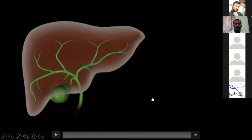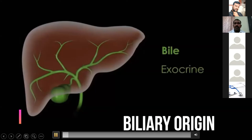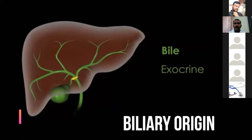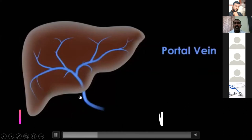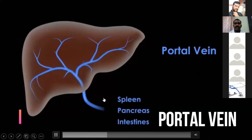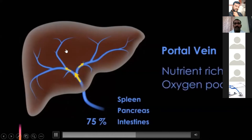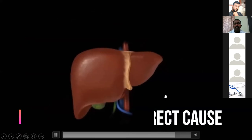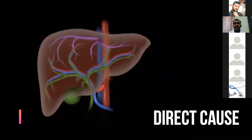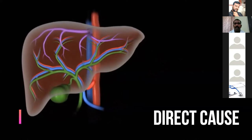The main routes of pyogenic liver abscess: first is biliary origin — any pathology in the gallbladder or biliary tract can produce pyogenic liver abscess. Second is via the portal vein — any pathology in the mesenteric vessels spreads via the portal vein to the liver. Third is via the hepatic artery reaching the celiac trunk. Fourth is direct causes such as blunt or penetrating trauma.